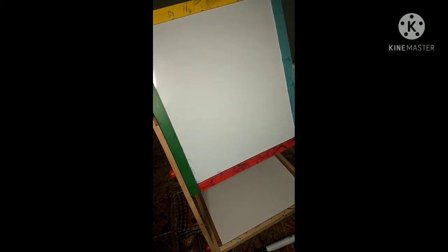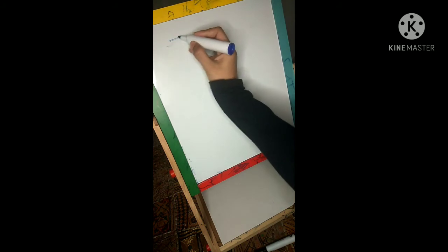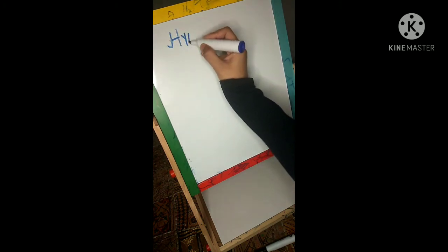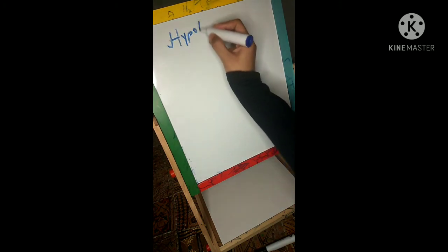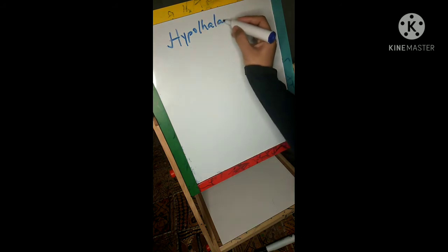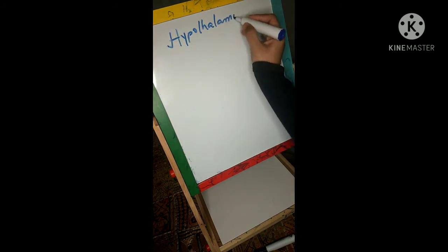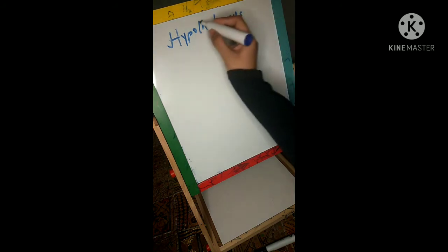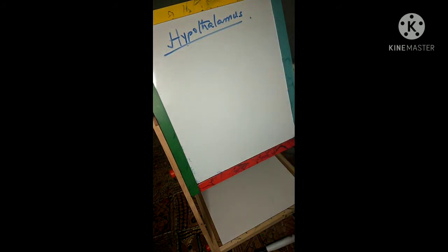Hello and welcome to Neurology Made Easy. Today the topic we are going to discuss is the hypothalamic hypophysial portal system and the hypothalamic hypophysial tract. Hypothalamus is a very important structure in our brain, and today I will tell you how various hormones are released.